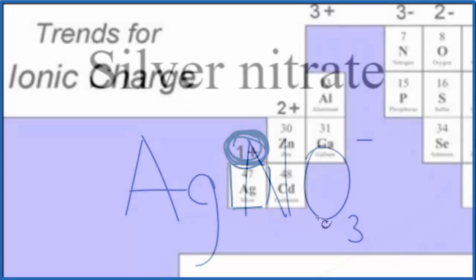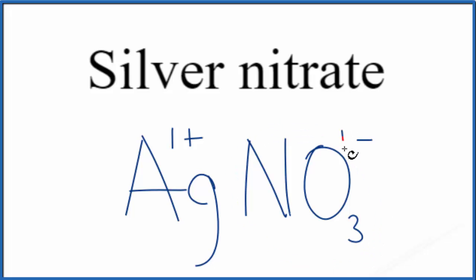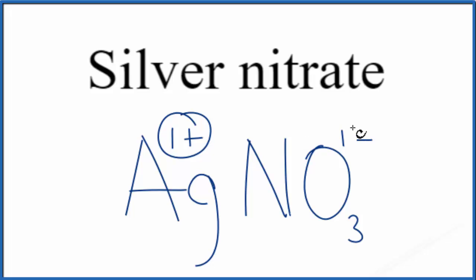Let's go back to our formula. The silver ion has a 1 plus ionic charge, and the whole nitrate ion has a 1 minus ionic charge. Because silver nitrate is a neutral compound, all of the charges have to add up to zero — we need a net charge of zero. 1 plus, 1 minus, that adds up to zero. So this is the correct formula for silver nitrate.